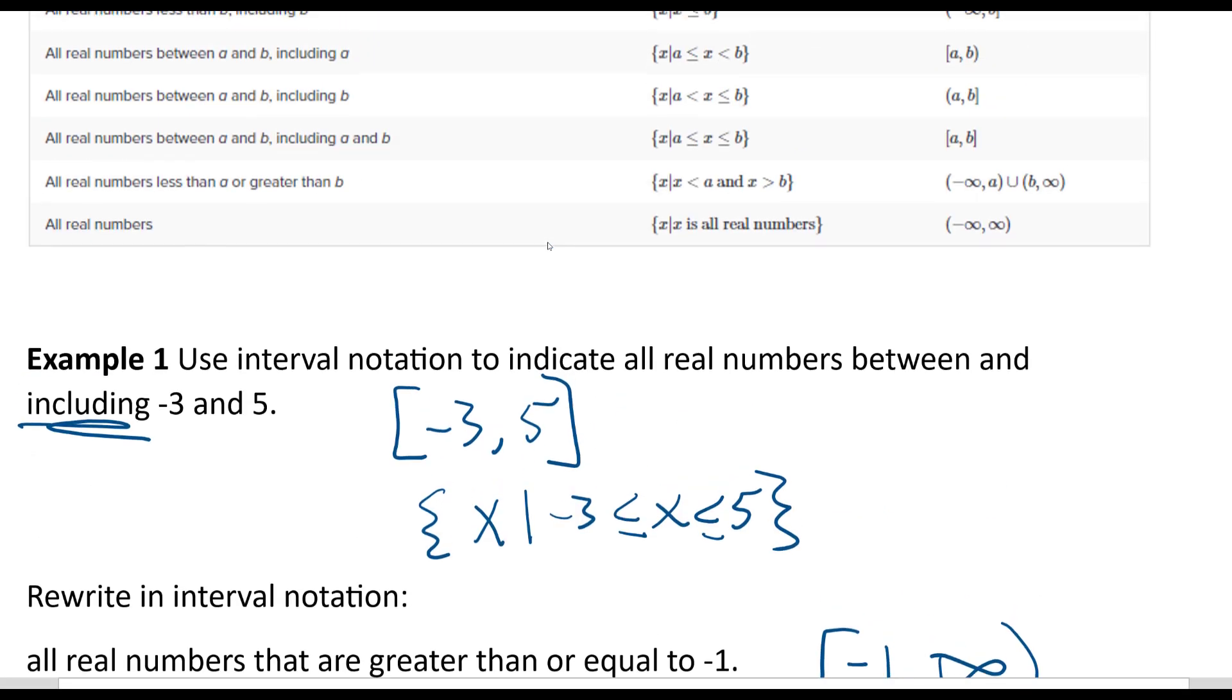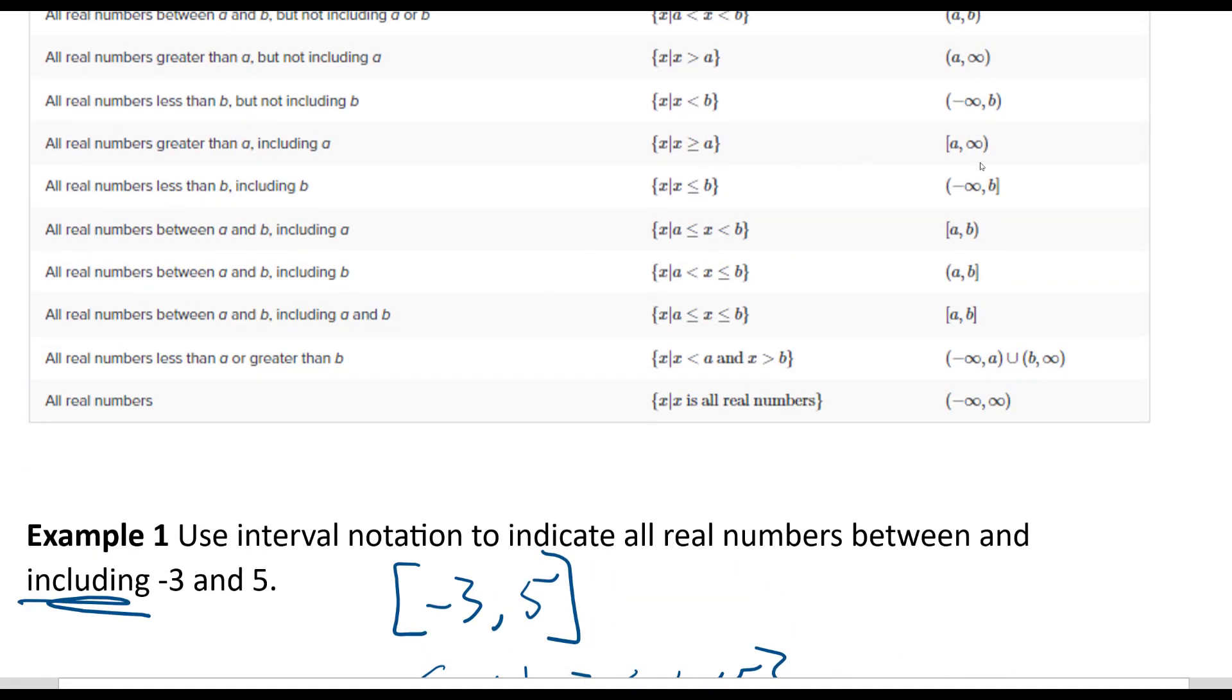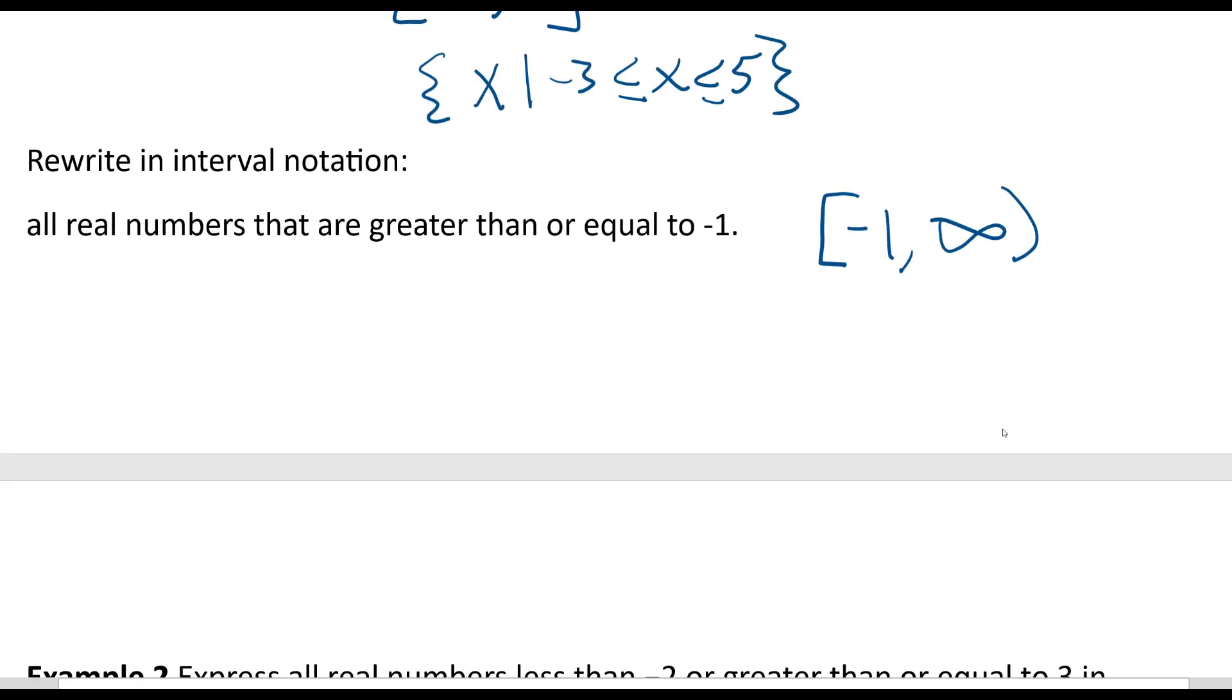And you can verify that up here with this chart. You know, the infinity's always got, or negative infinity, always has a parenthesis with it. Okay. And might as well brace x such that x is greater than or equal to negative 1. That's how we do that in set-builder notation.